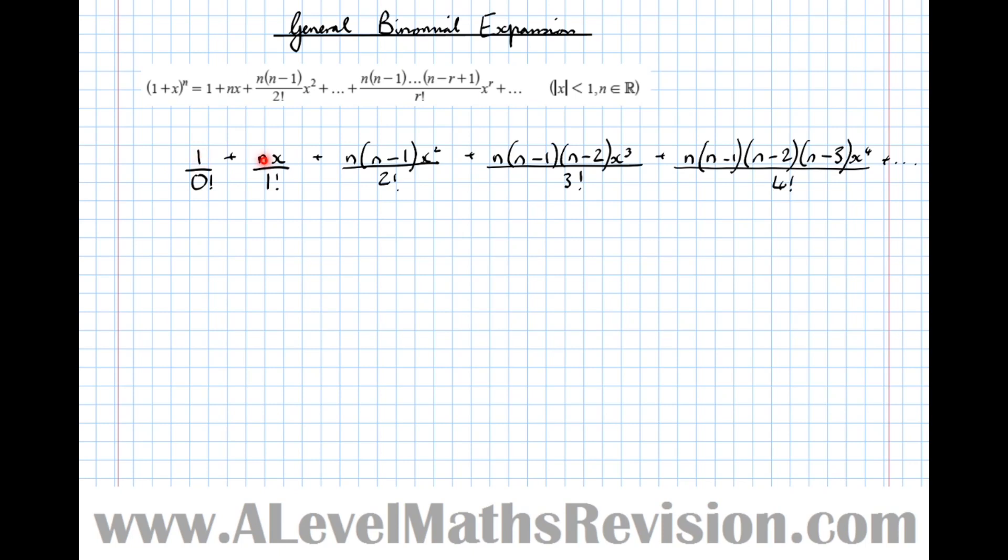Here there's no n's, then there's 1 n, n times n minus 1, n times n minus 1 times n minus 2. So an extra factor, 1 less than the previous, we multiply by each time.